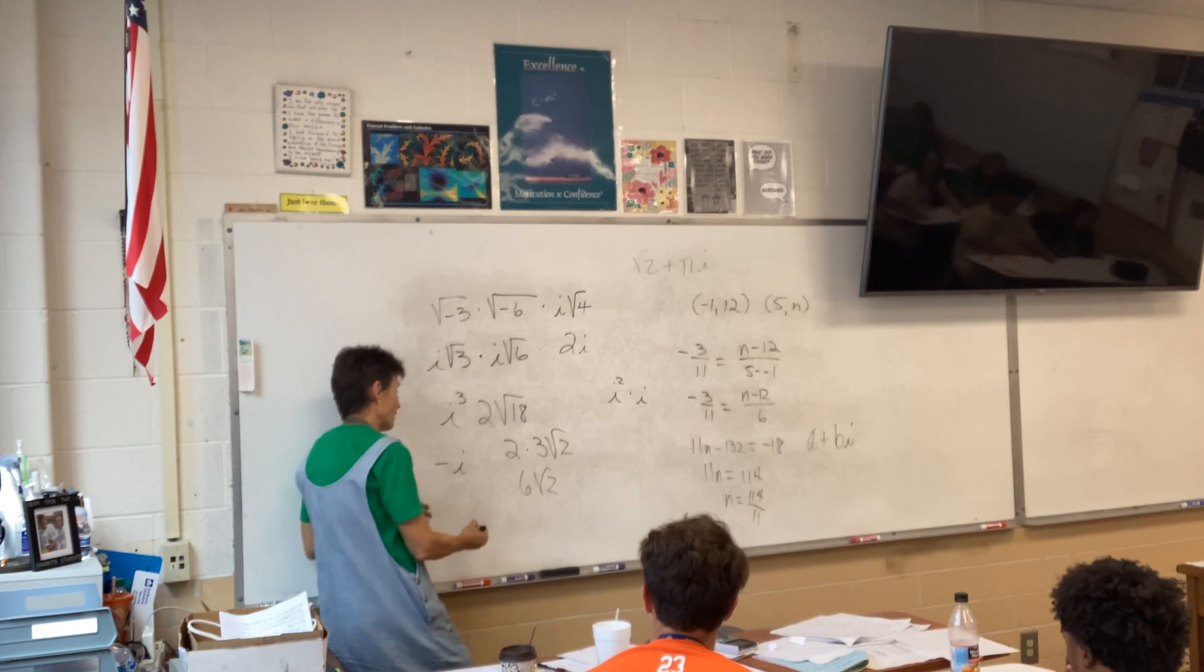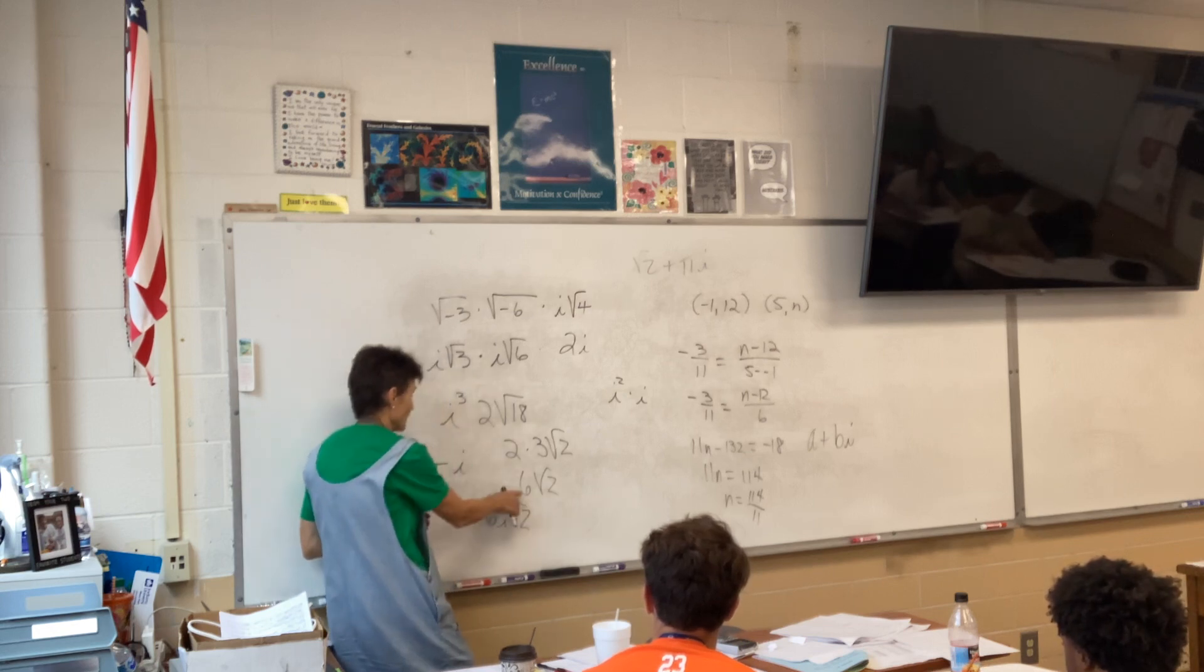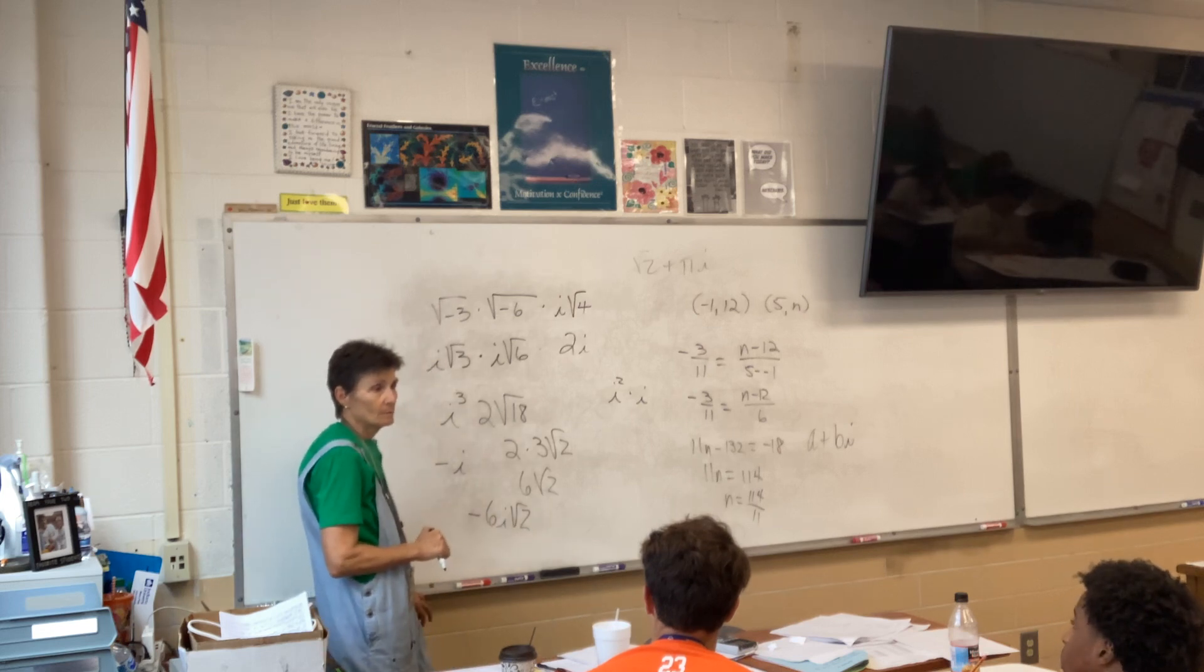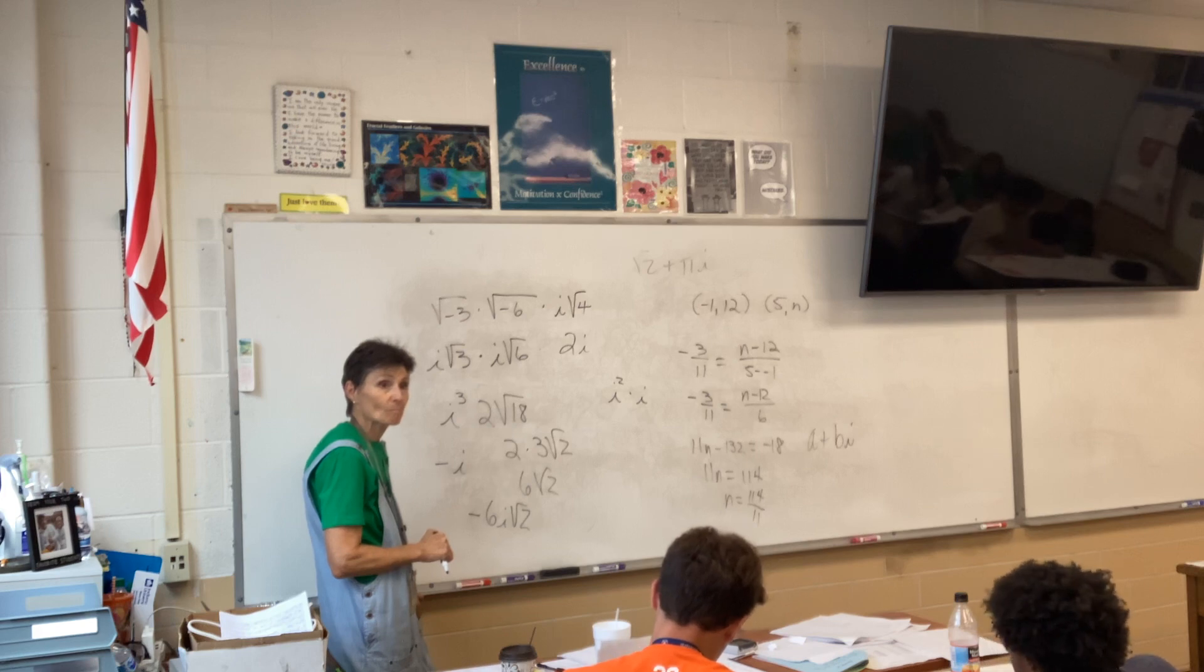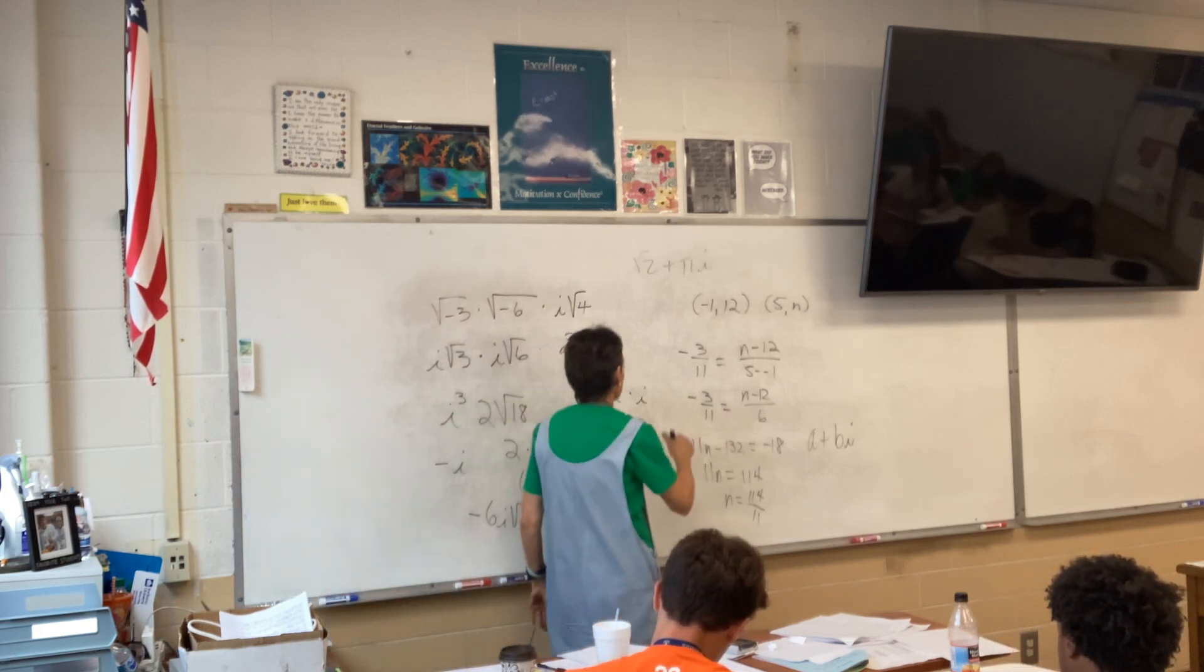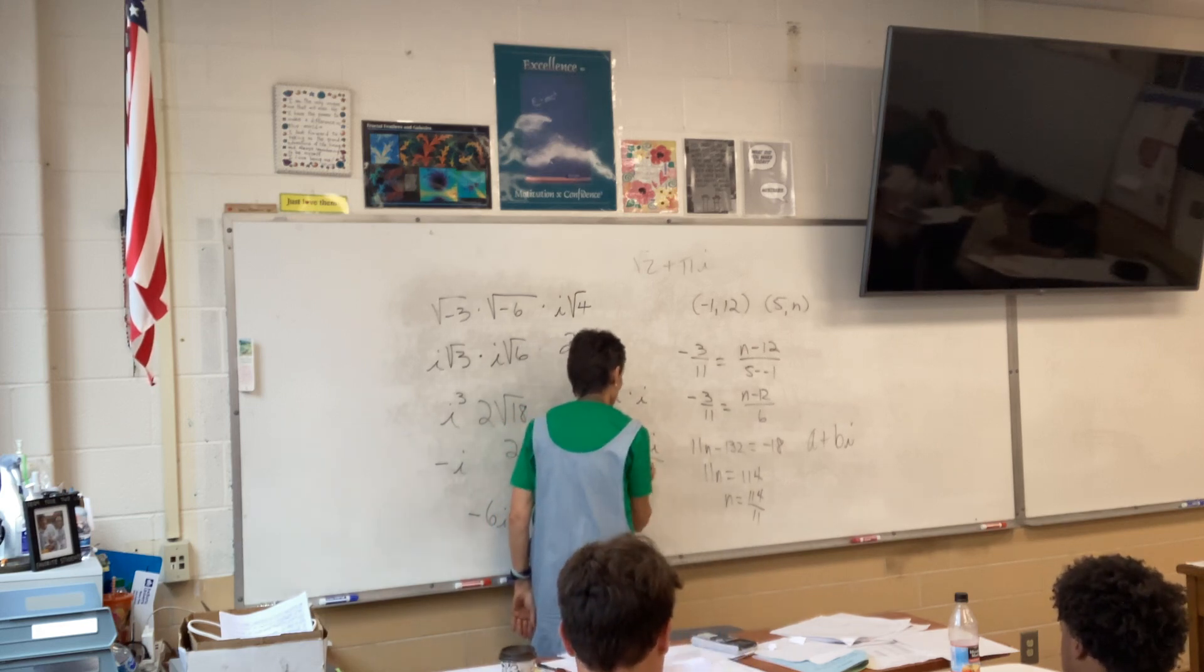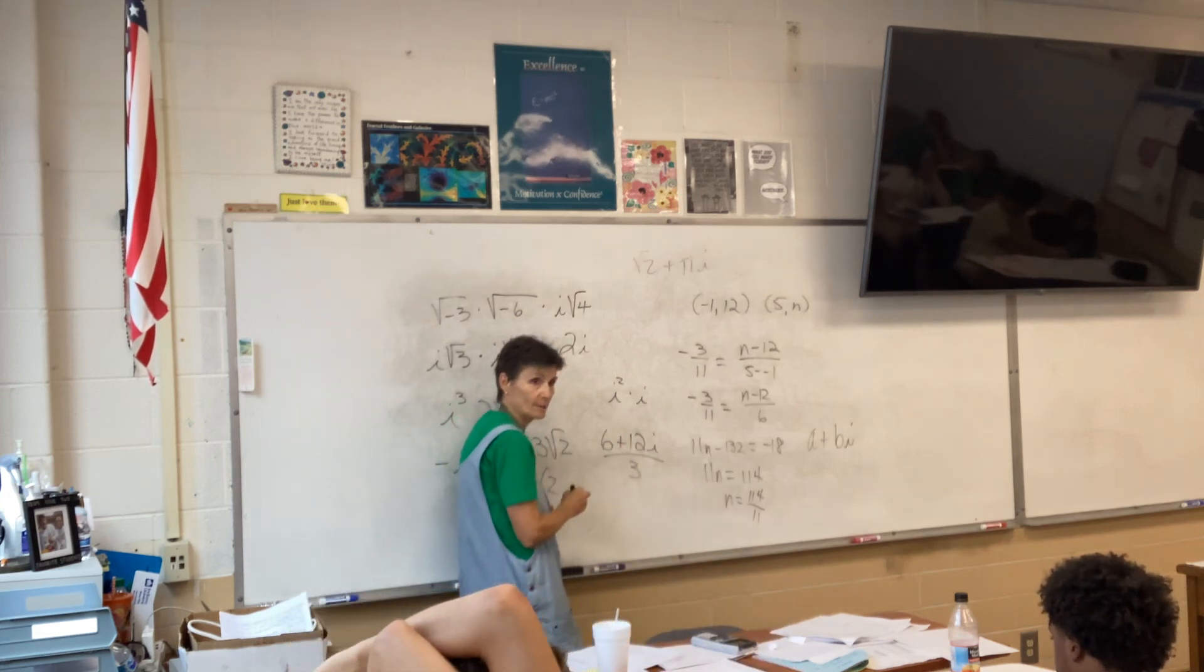I just had a question about complex numbers. If it's over a fraction, do all 3 have to cancel out? Yes. So, if you had, if you had 6 plus 12i over 3, that problem reduces. Because 3 can go into all of those.